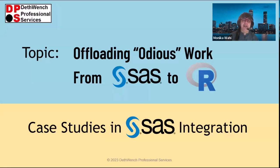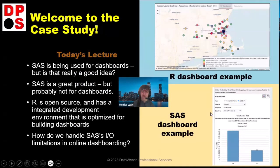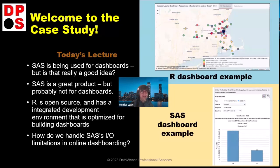What I'm going to talk to you about today is offloading ODS work from SAS to R. If you're a SAS insider like me, you know what I mean by ODS. The output delivery system, or ODS, in SAS is the facility that allows SAS to do graphics. SAS was invented basically in the 70s, and the ability to add graphics to such an old software was really cool.